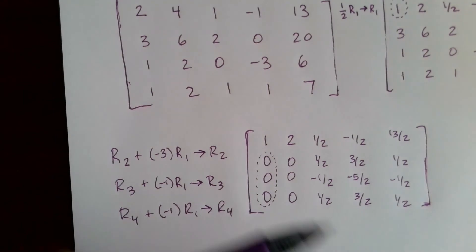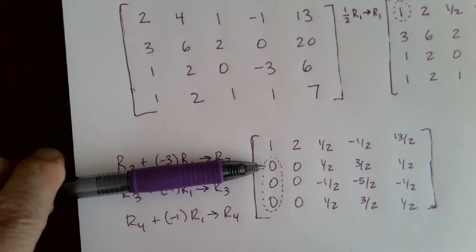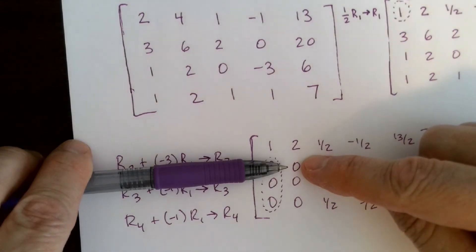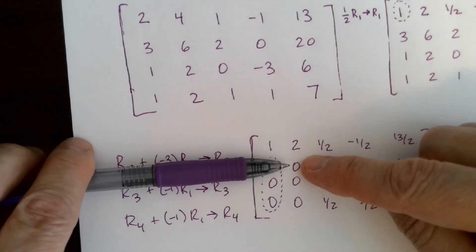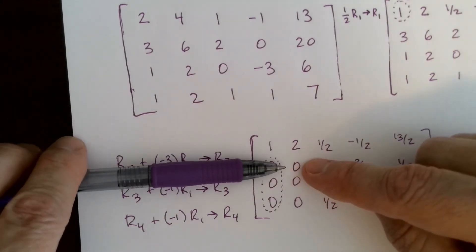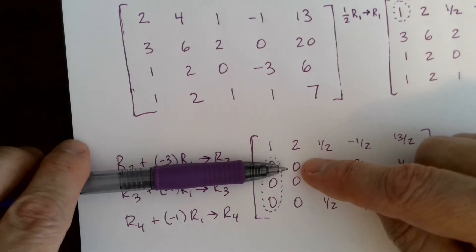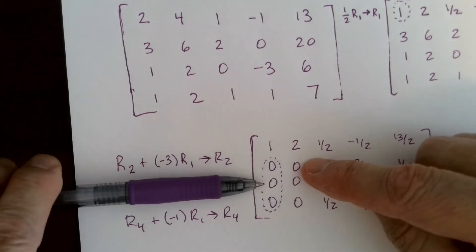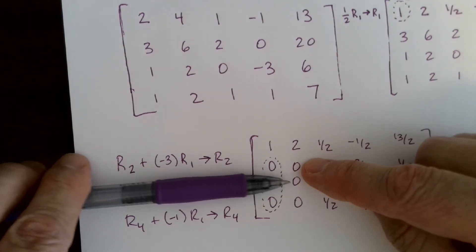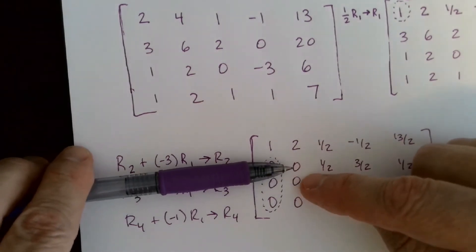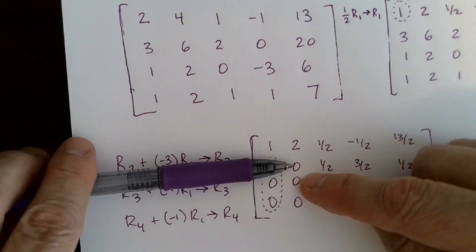After getting the leading 1 in row 1, move to the second row and go to the next entry — I want a leading 1 here. Looking at the second row, second column entry — it's a 0. You can't multiply by the reciprocal of 0. If it were non-zero, like 3, I'd multiply by 1/3. Since it's 0, look beneath it — not above — to find a non-zero entry. In this case there is none, meaning the leading 1 in row 2 won't be in the second column.